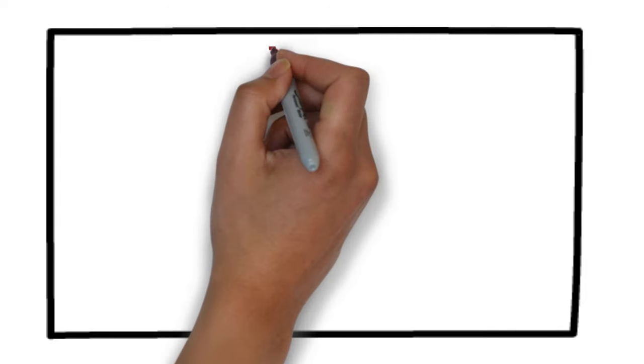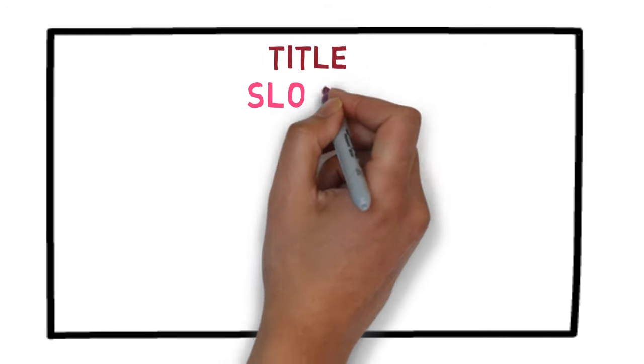The next step is in the top middle, write the title or theme of the poster. Next, exactly below it, write the slogan or quote related to the theme for which the poster is being created.